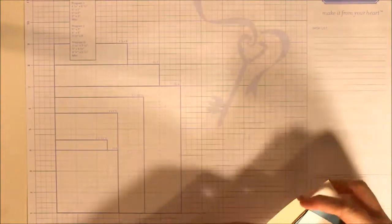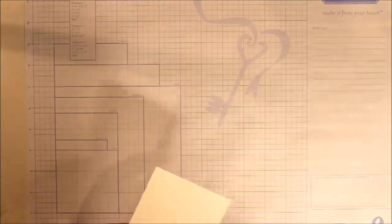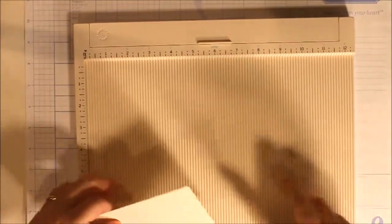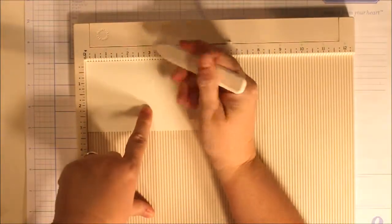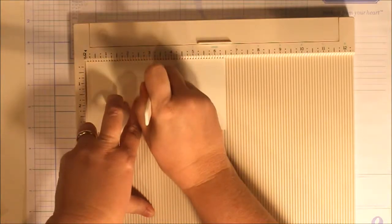So the first thing that we're going to do is score our card stock. And we're going to score this at three quarters of an inch so that it is half of the card.